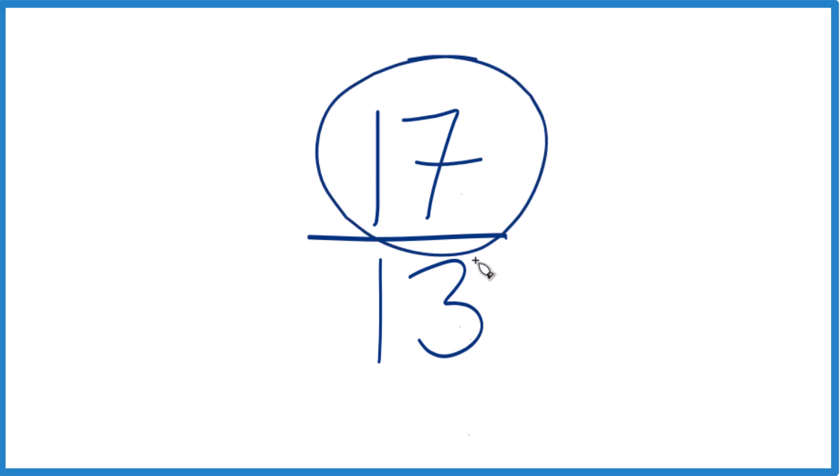If you divide 17 by 1 and 13 by 1, you get 17 thirteenths. That tells us that this is already simplified.